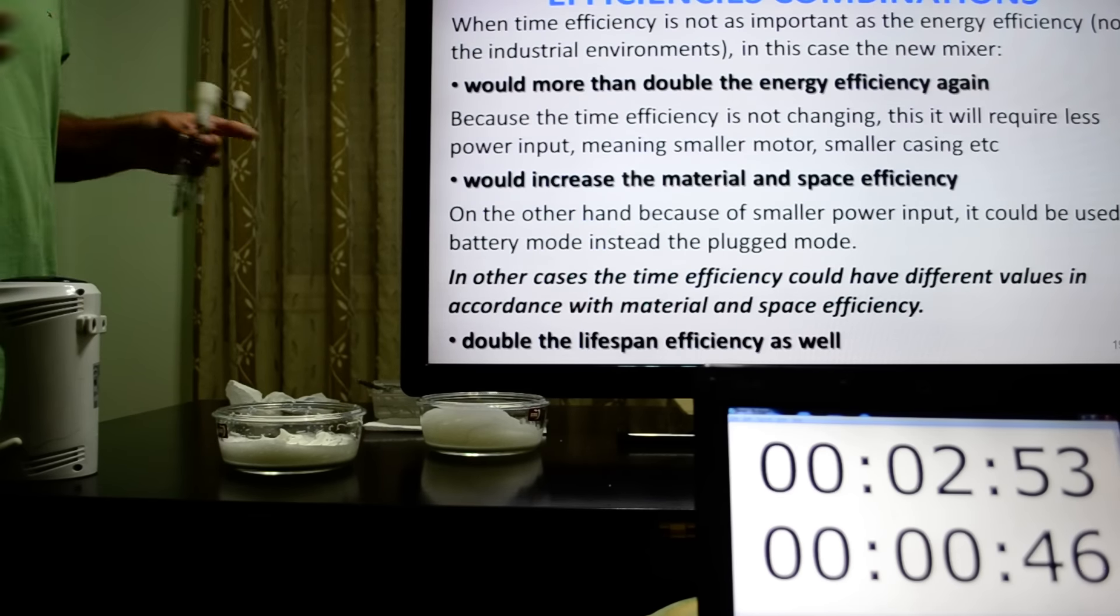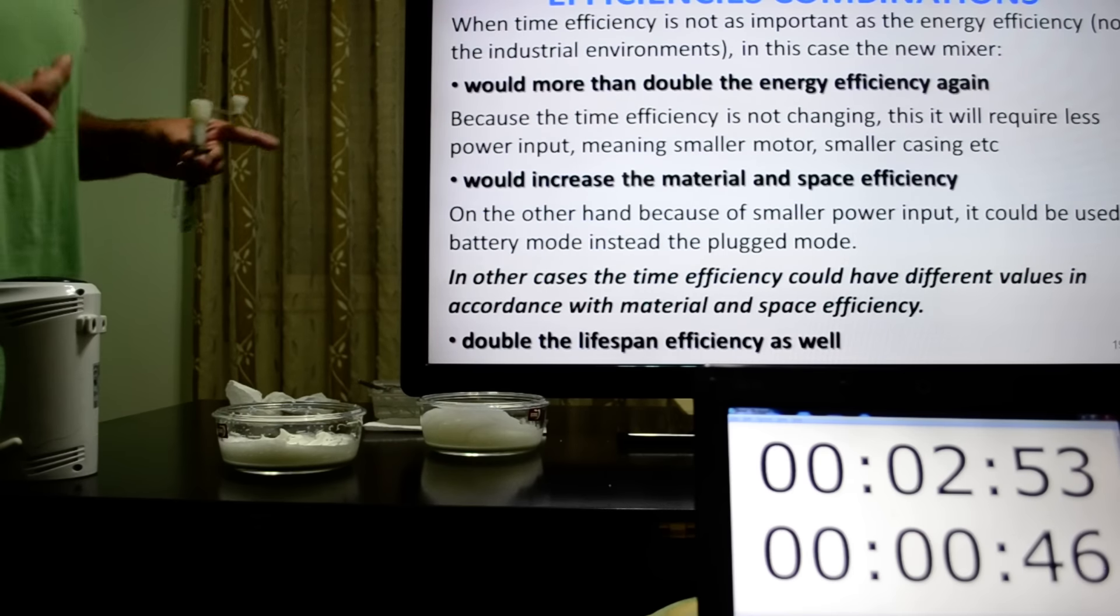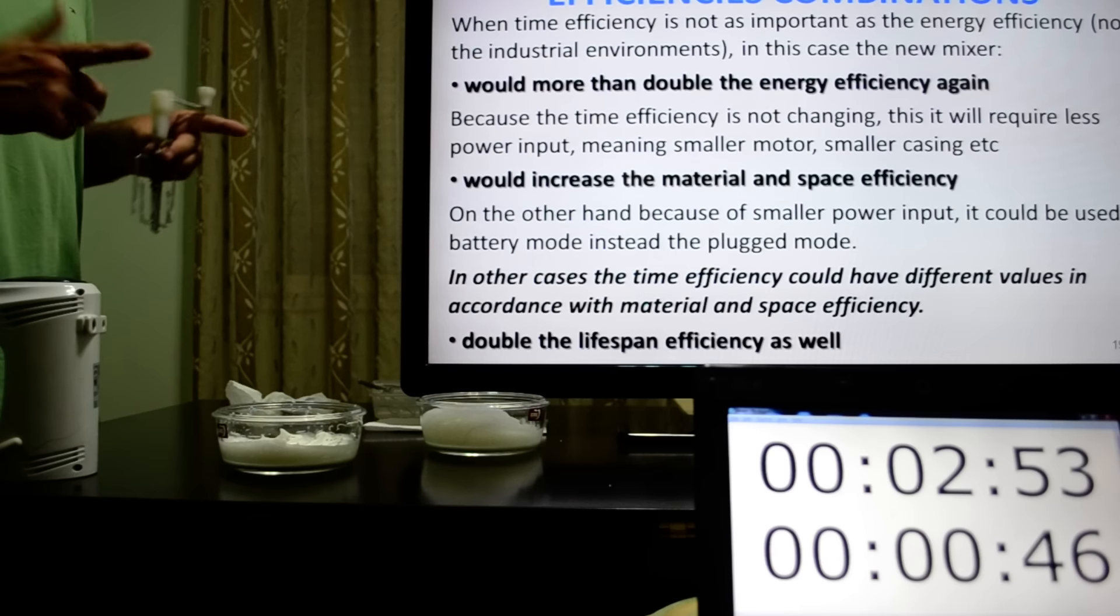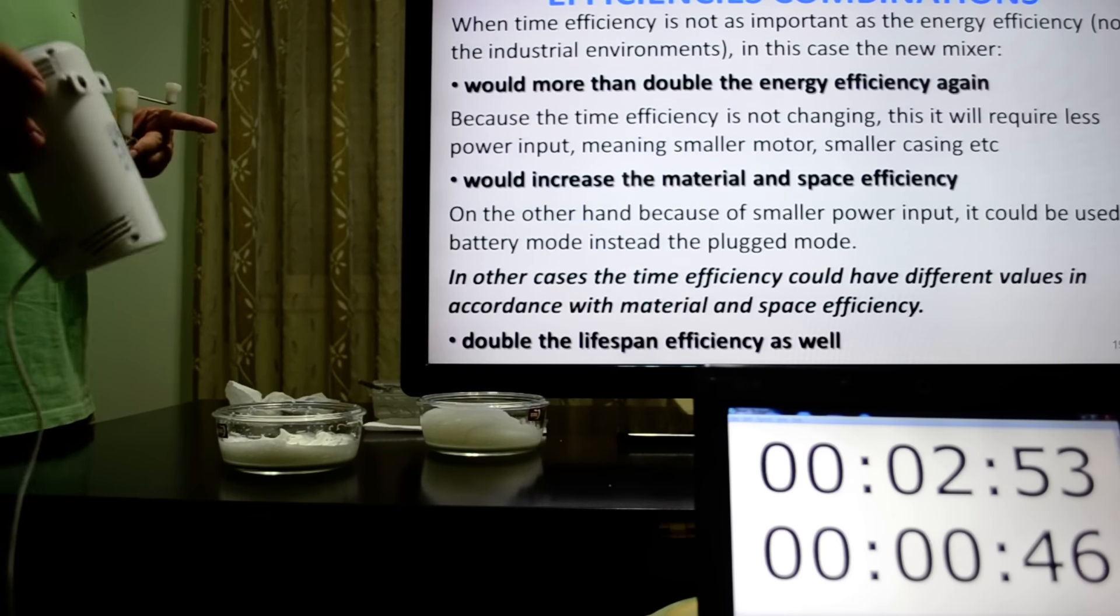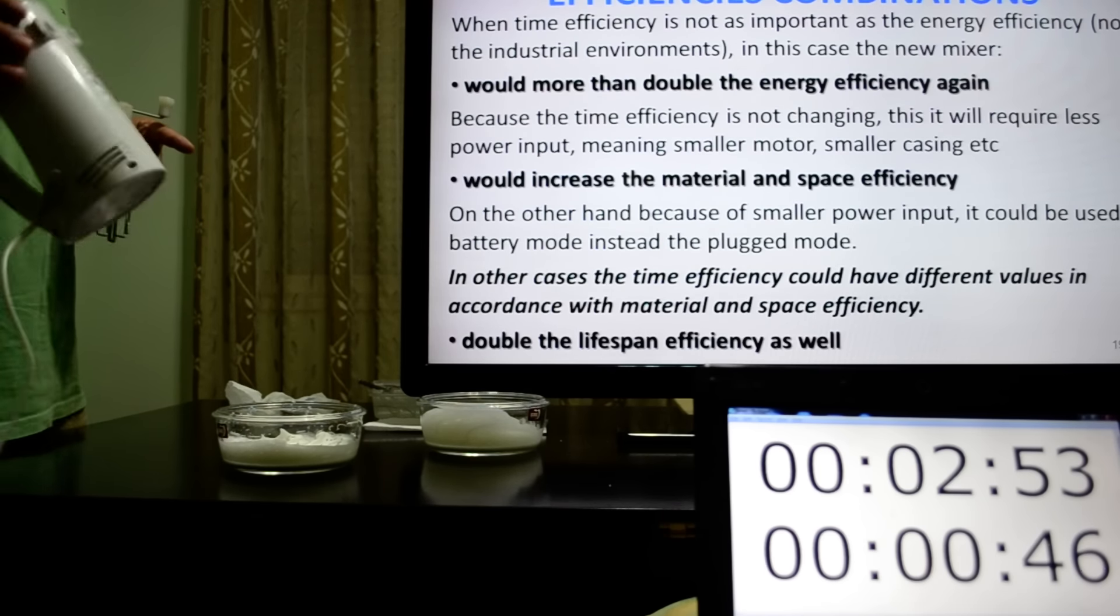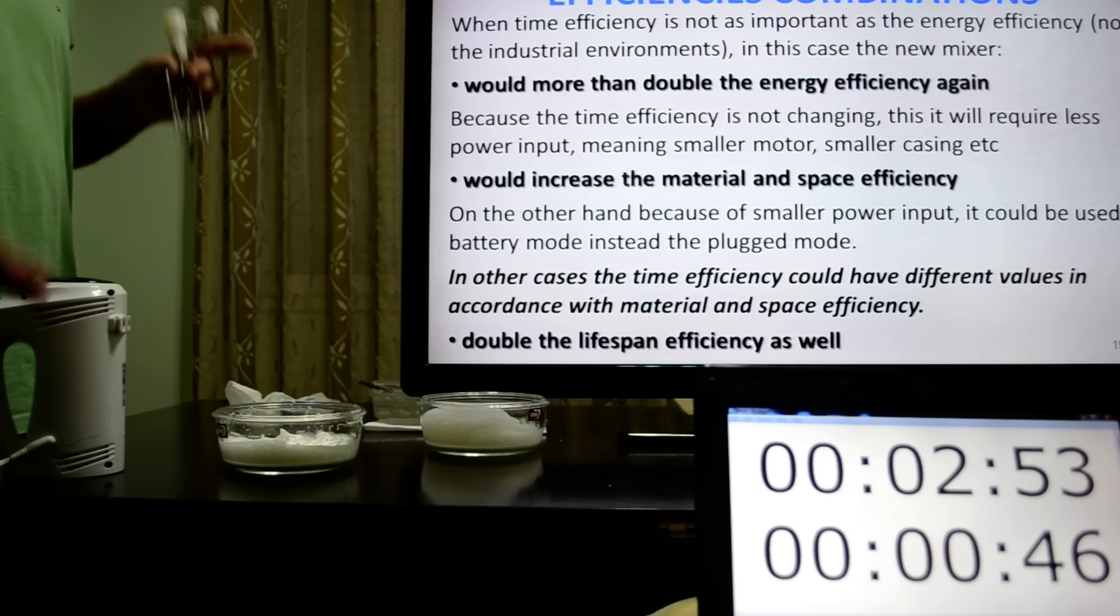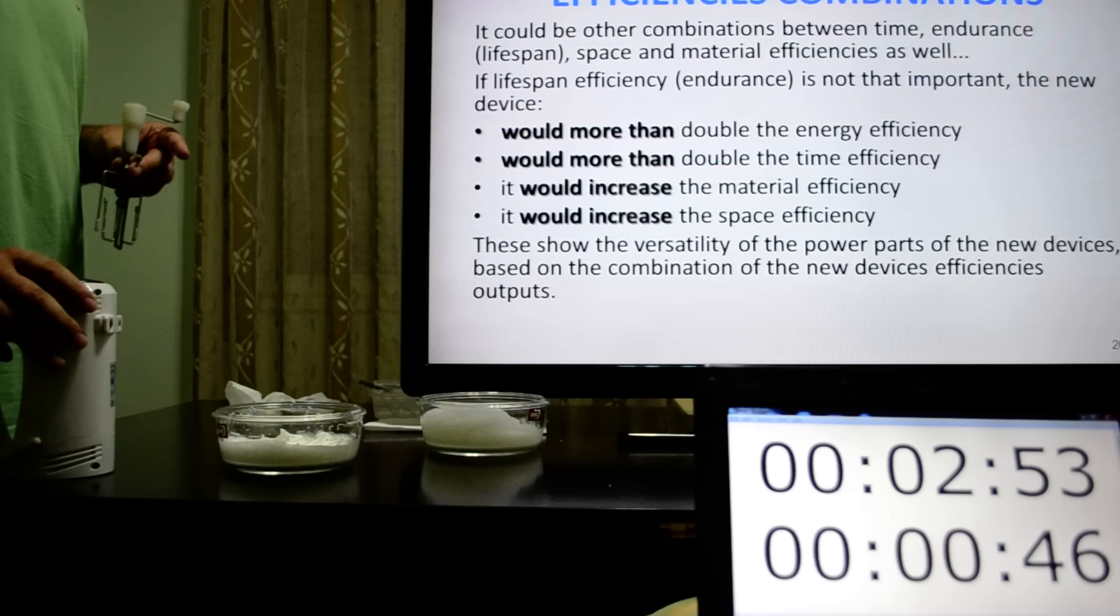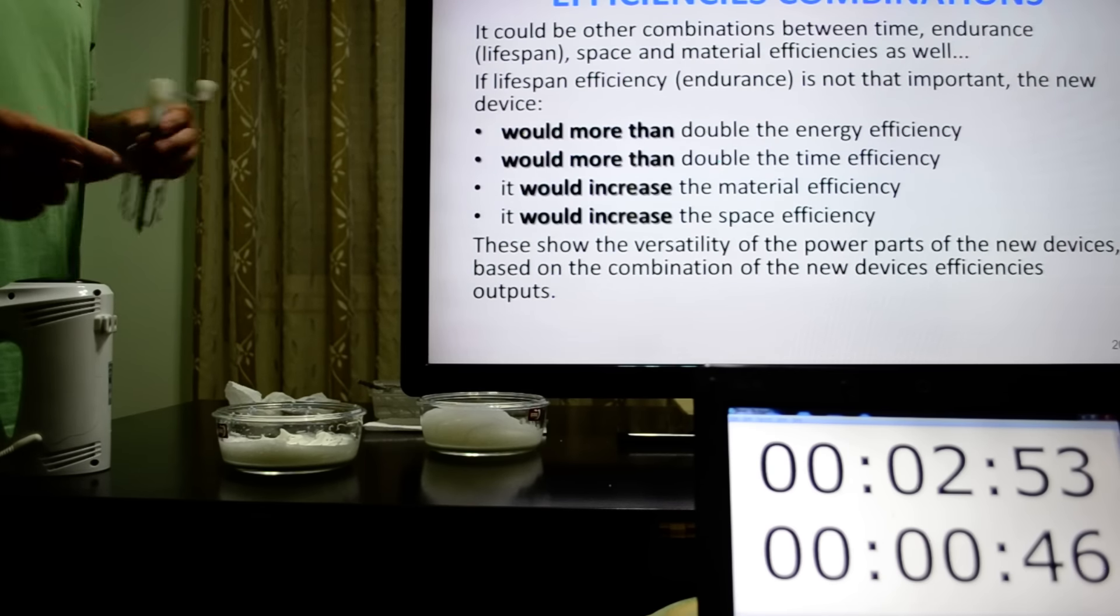When time efficiency is not as important as energy efficiency, not in industrial environments, in this case the new mixer would more than double the energy efficiency again. But because the time efficiency is not changing, this will require less power input, meaning smaller motor, smaller casing, etc. So in this case, it will increase the material and space efficiency. In other cases, the time efficiency could have different values in accordance with material and space efficiency. It could be other combinations between time and joules, space and material efficiency as well.